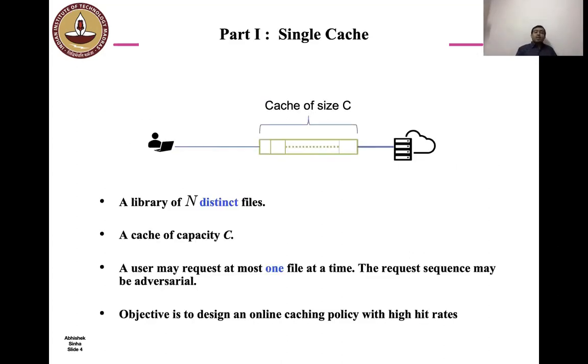To set the stage for our analysis, before we jump to the general network caching problem, let's consider the special case of a single cache problem. We consider a library consisting of N distinct files. We assume that a user is connected to a cache of capacity C. The cache, in turn, is connected to a data center which hosts all N files.